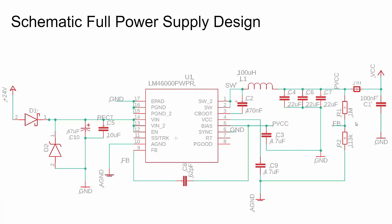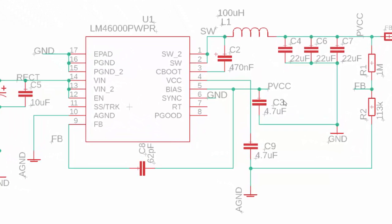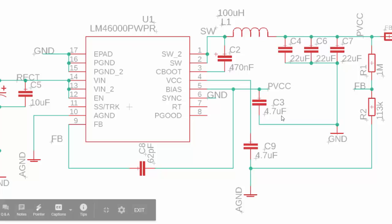Here's the actual schematic. We have our LM46000, our flywheel circuit, and feedback elements, but we also need to handle the input AC. We have some protection on the input and noise reduction on the output. Let's talk more about the DC to DC converter design — a big thing here is the power inductor, output capacitors, input capacitor, and the feedback and biasing elements.